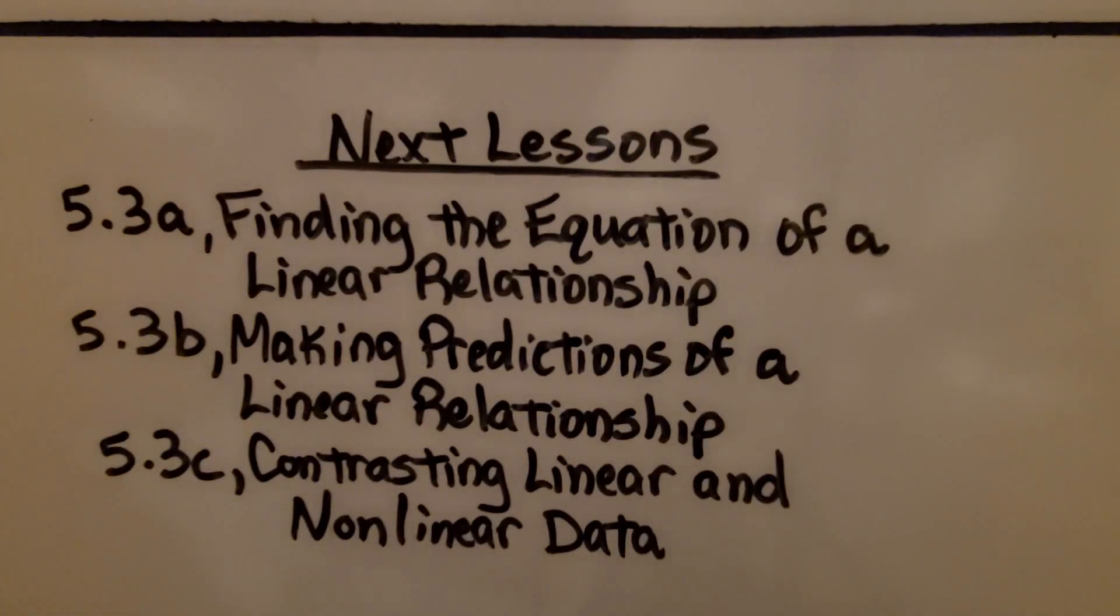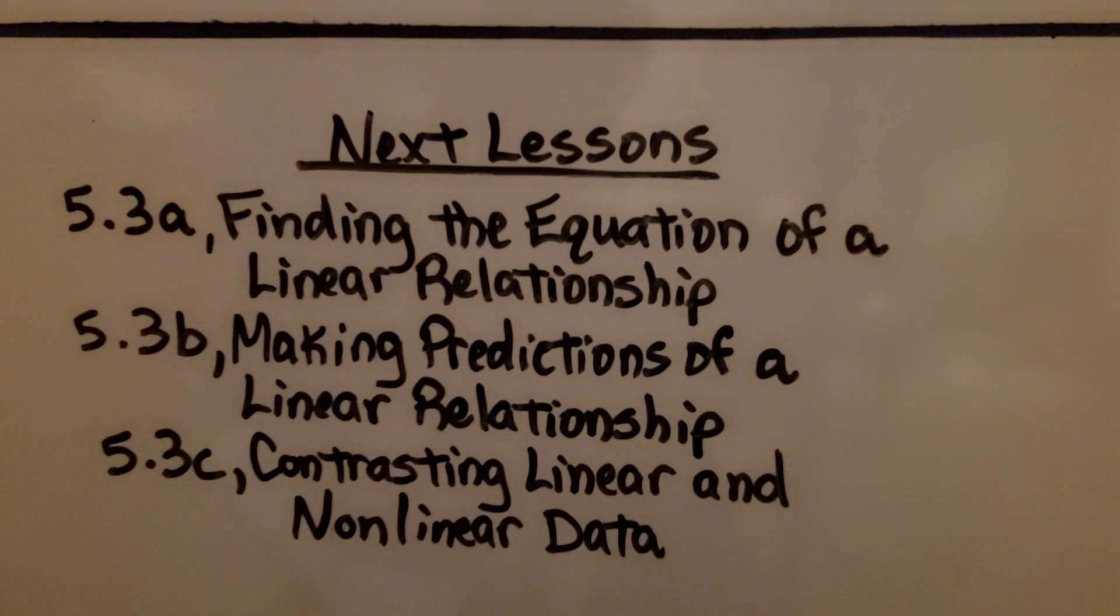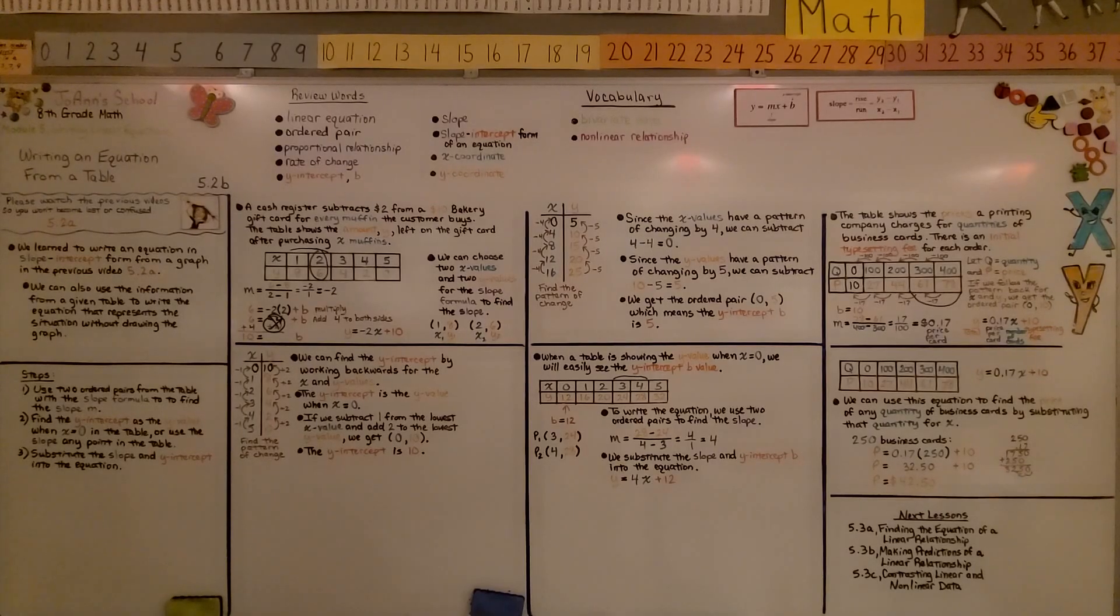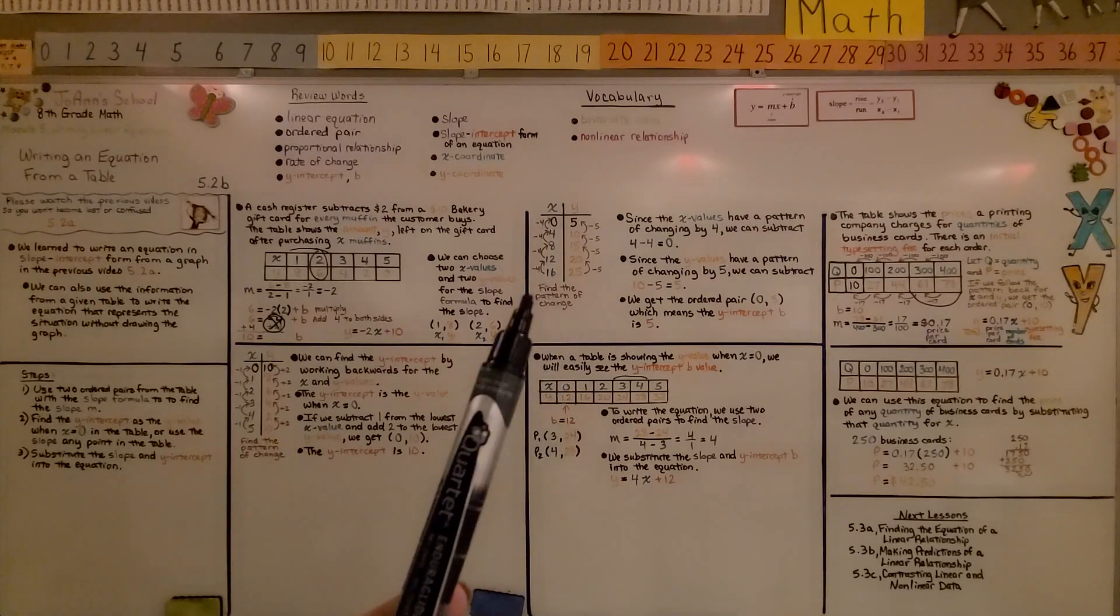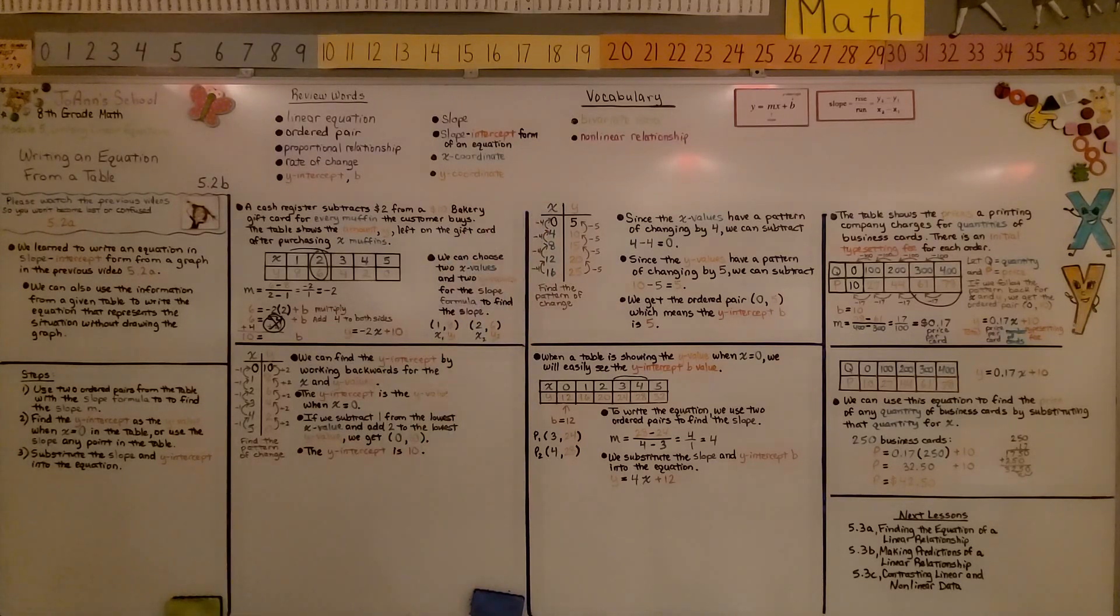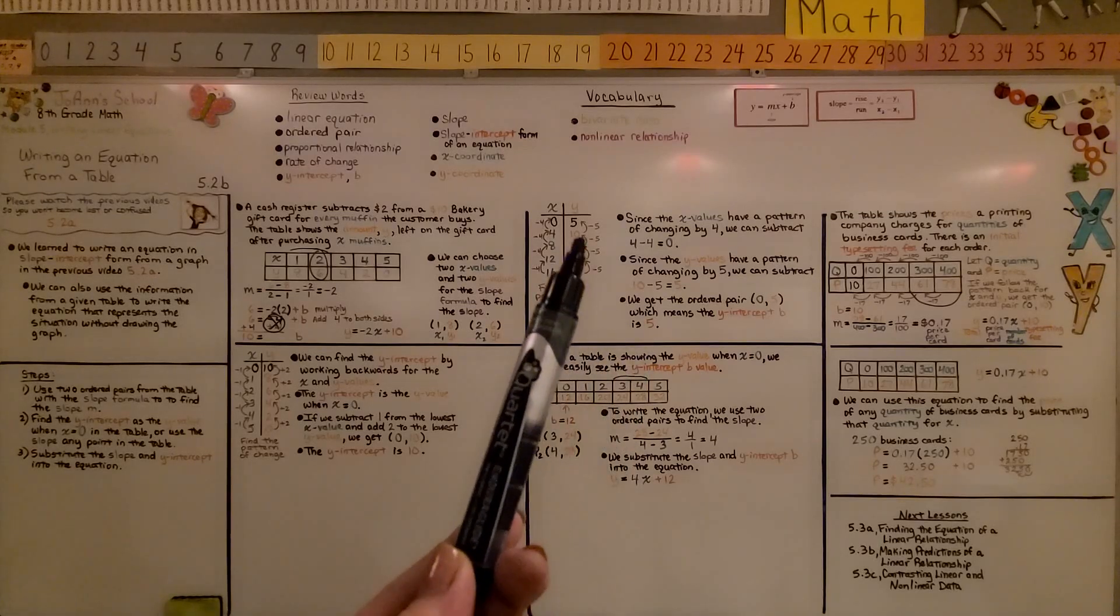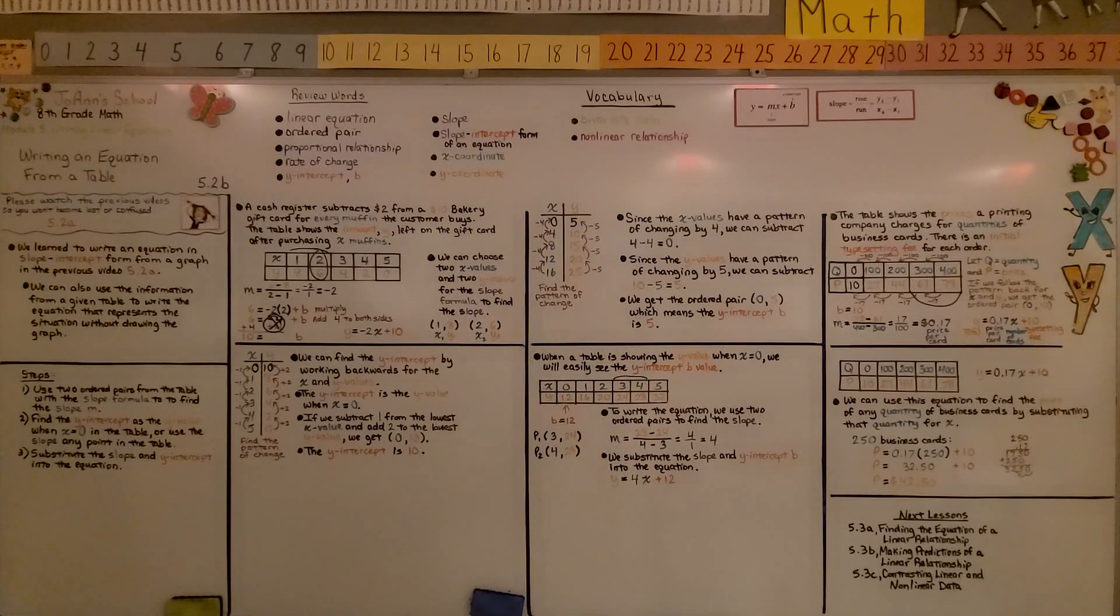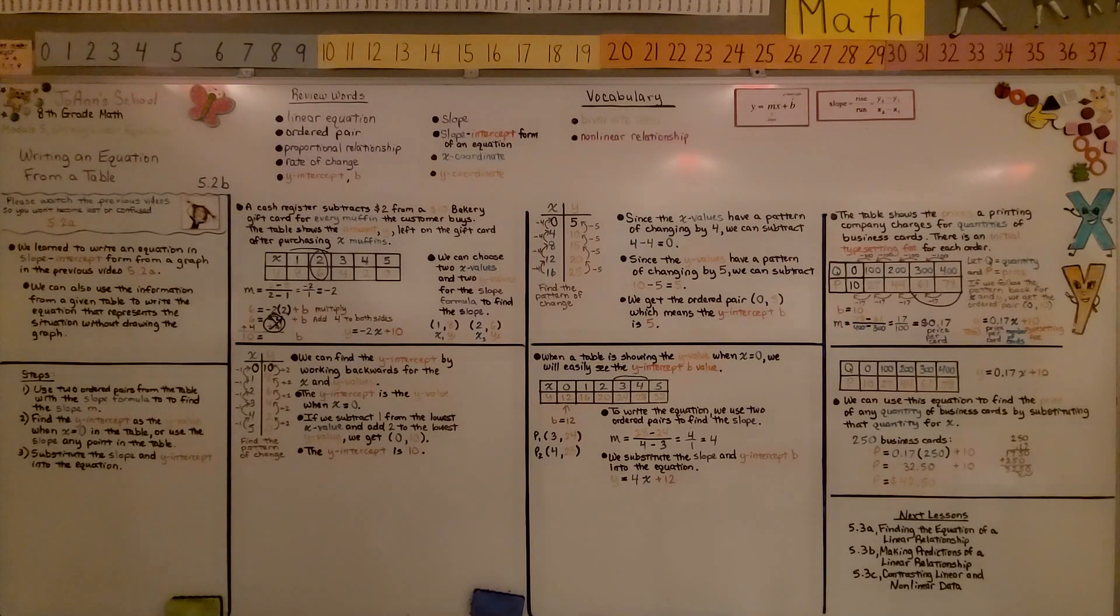We're finished with lesson 5.2 and moving on to 5.3, and we're going to be finding the equation of a linear relationship. Just remember, when you're doing the table of values, you can find the pattern of change and work back to find where x equals 0 to find that y-intercept b as the y-value when x is 0. I hope the rest of your day is productive, and I hope you join me for lesson 5.3. Bye!